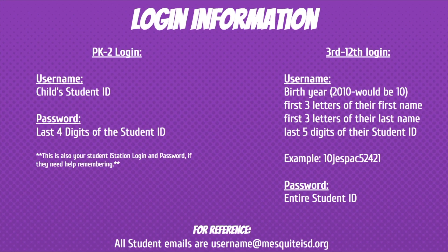Students in 3rd to 12th grade log in with the last two digits of their birth year — for example, if they were born in 2010, it would be 10 — followed by the first three letters of their first name, the first three letters of their last name, and the last five digits of their student ID. Here is an example on the screen. The password is the entire student ID, and student emails are all their username at mesquiteisd.org.